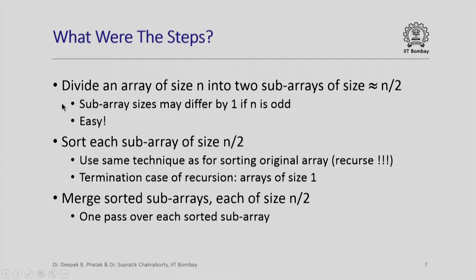What were the key steps in merge sort? We divided an array of size n into two subarrays of roughly n/2. If n is odd, the sizes may differ by 1 — this was an easy step. Then we recursively sorted each subarray of size n/2 using the same technique, with arrays of size 1 as the terminal case, since they are already sorted. We also saw how to merge sorted subarrays each of size n/2 quite efficiently by making a single pass over each sorted subarray.